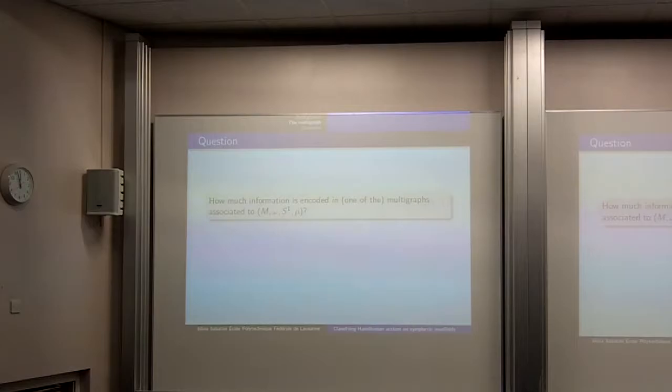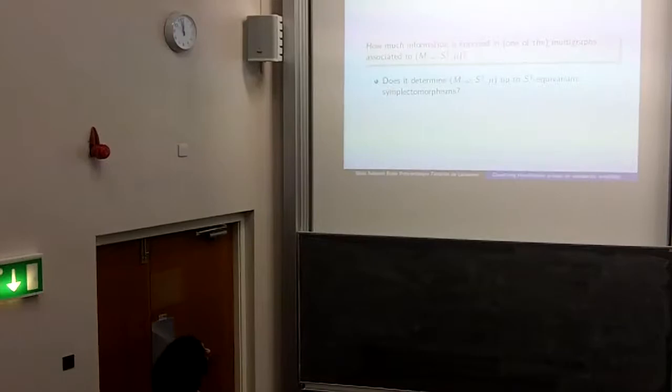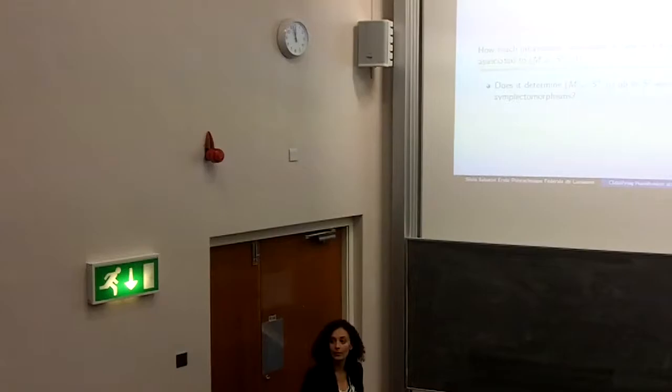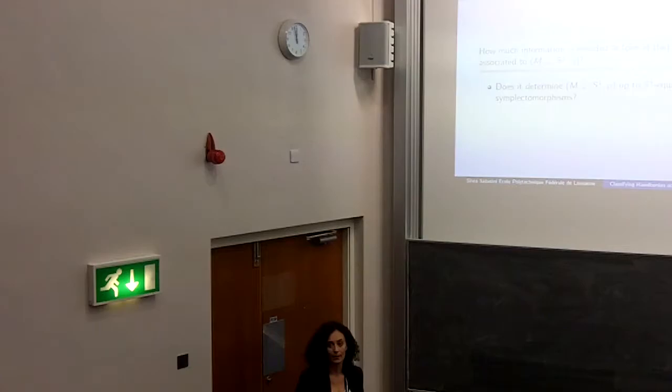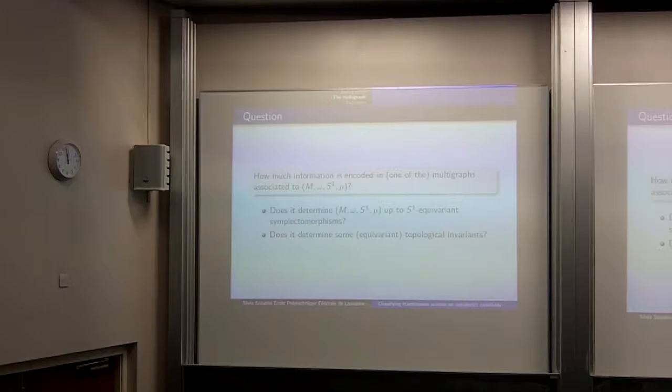The question is: how much information is encoded in one of the multigraphs associated to the manifold? Does it determine the manifold up to S¹-equivariant symplectomorphisms? The answer is yes or no — it depends on the dimension of the manifold. Does it determine some equivariant topological invariants? Also: it depends. We will see in which cases I can actually determine some topological invariants.